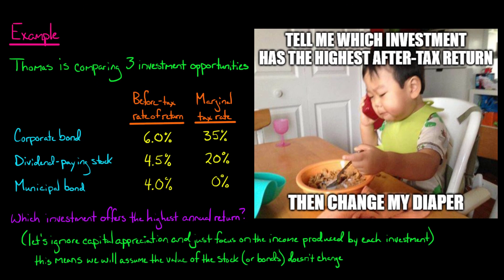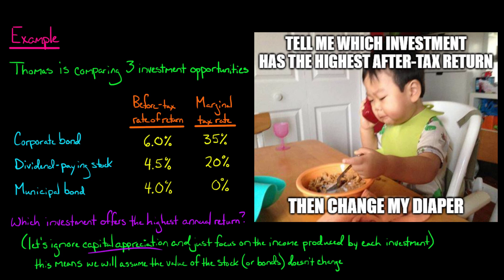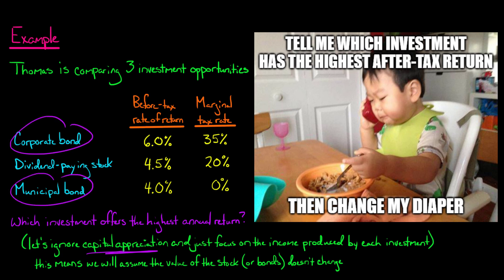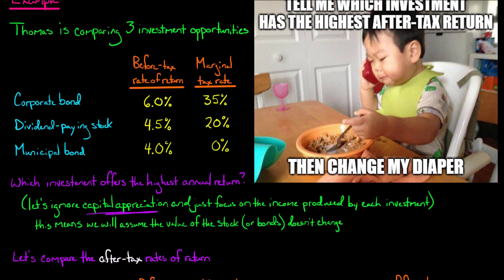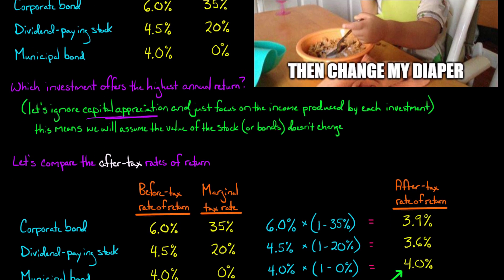In this example, let's ignore capital appreciation. Some of you might be thinking about the fact that a stock might go up in value more than a corporate bond or municipal bond over time — that's a valid consideration, but let's assume we're only focusing on the income produced by each investment. The corporate and municipal bonds give interest to Thomas, and the stock gives dividends. We just want to calculate the after-tax rate of return given these hypothetical tax rates and before-tax rates of return.